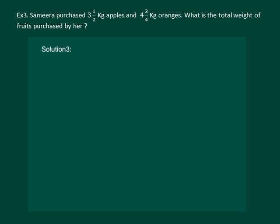Let us read the question. Sameera purchased 3 and 1 half kg of apples and 4 and 3 by 4 kg of oranges. What is the total weight of the fruits purchased? Before finding the total weight of the fruits, let us convert these mixed fractions into improper fractions.